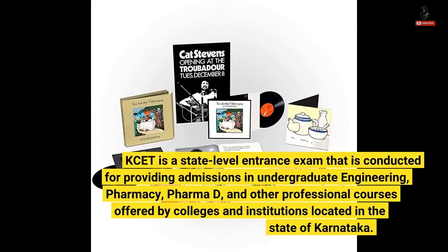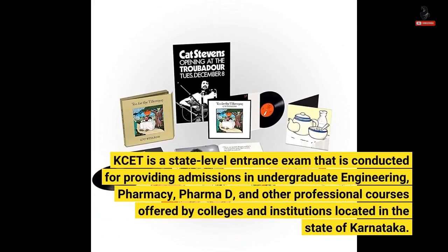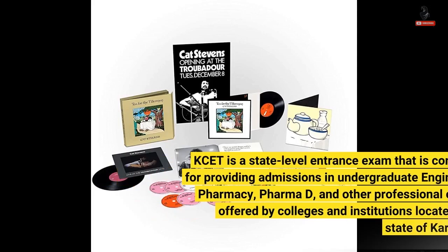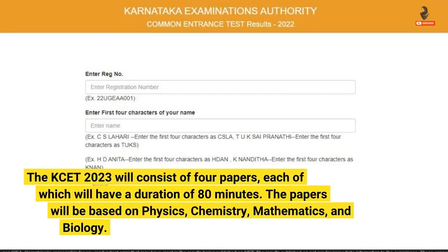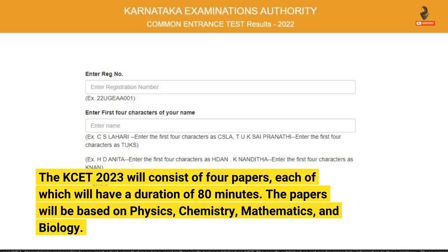KCET is a state-level entrance exam conducted for providing admissions in undergraduate engineering, pharmacy, Pharma-D, and other professional courses offered by colleges and institutions located in the state of Karnataka. The KCET 2023 will consist of four papers, each with a duration of 80 minutes. The papers will be based on physics, chemistry, mathematics, and biology.